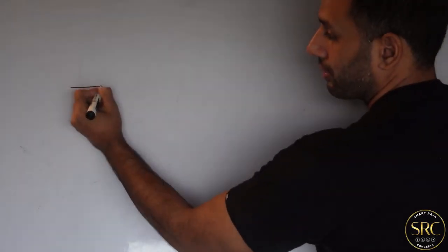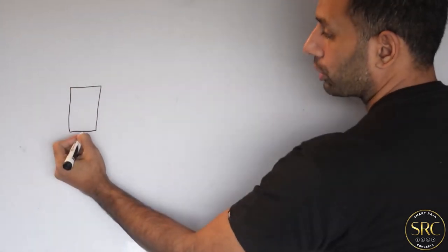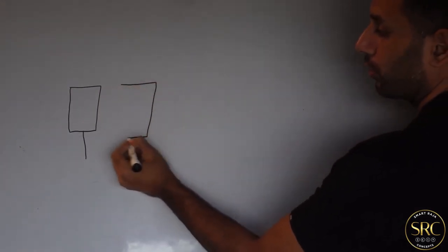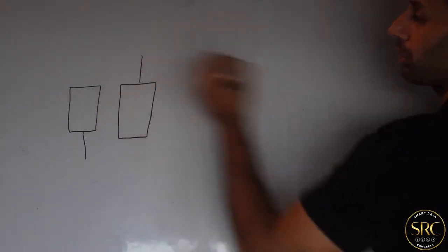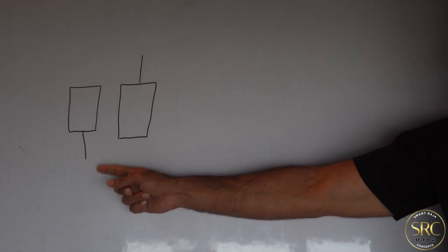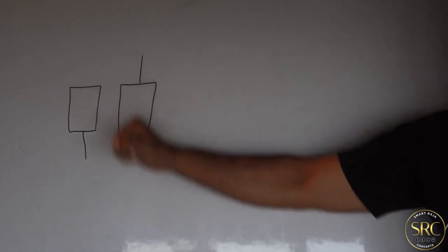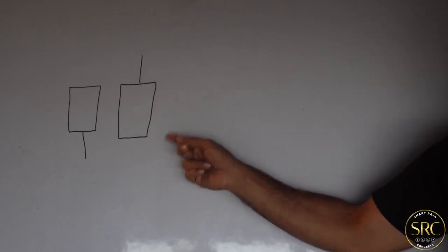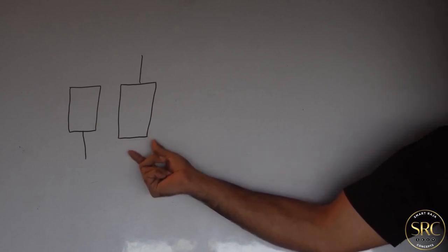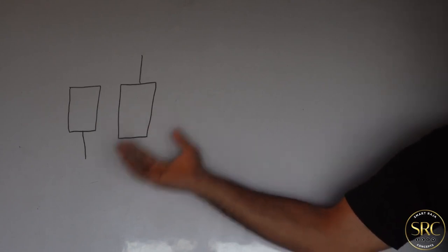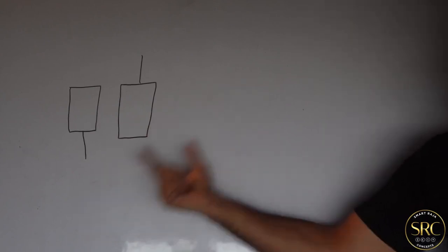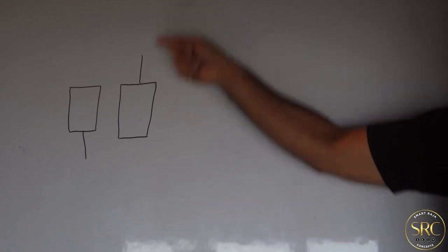Here we have a bullish candle with no wick on the top but a wick at the bottom. Next, we have a bullish candle with no wick at the bottom but a wick on the top. Usually when you have a bullish candle with no wick on the top, this means there's no range for the next candle to go up. But when you have a candle with no wick at the bottom, the volume was so much bullish that it couldn't even go down — it just moved up and created a wick on the top.